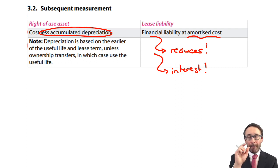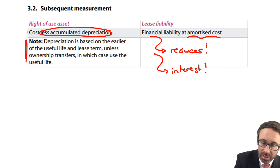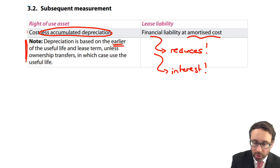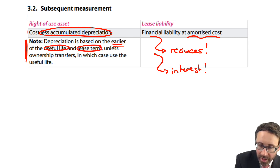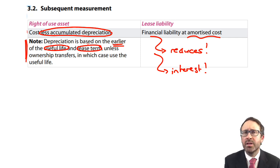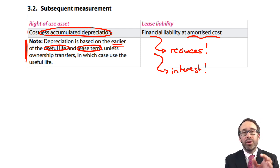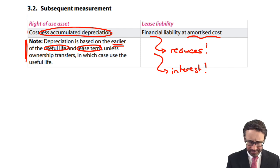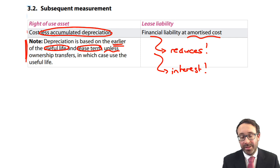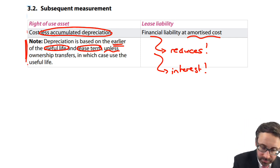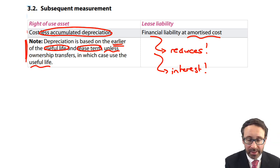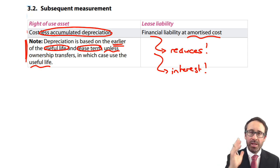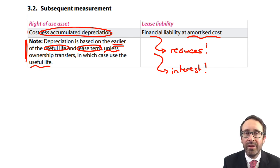Going back to the right-of-use asset: you depreciate it over the shorter of the useful life and the lease term. So if the lease term is five years but the asset only has a useful life of four years, you depreciate over four years — because that's when you get the benefit from using it. As a small exception, if ownership transfers at the end of the lease, then you use the full useful life for depreciation.